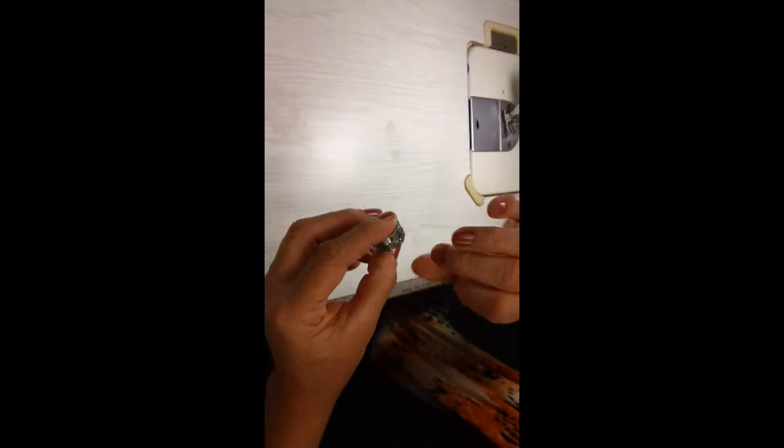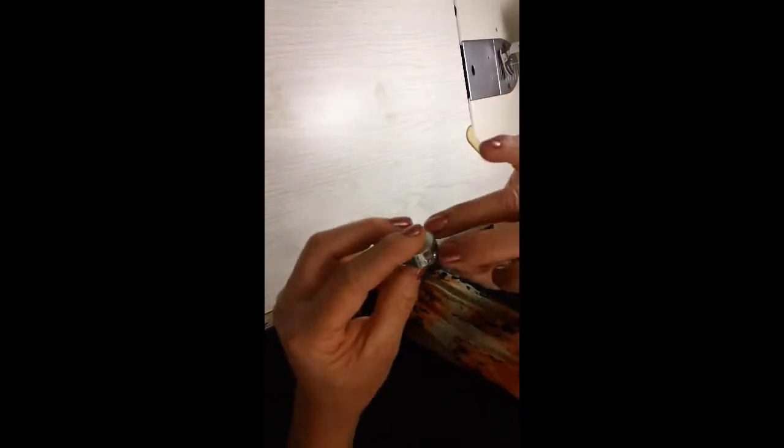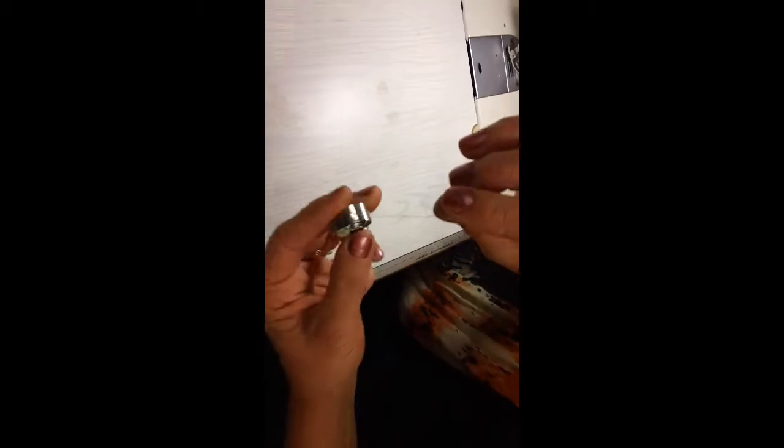If you drop your bobbin, it should just run a little bit like that. If it continues to run, then the tension is too loose and you need to tighten that screw. If it doesn't run at all, you may need to loosen it.